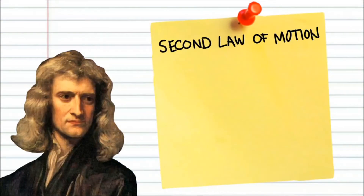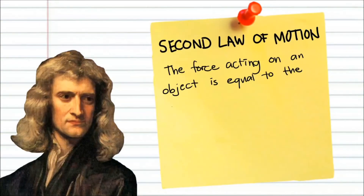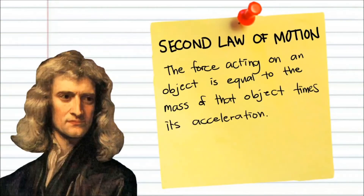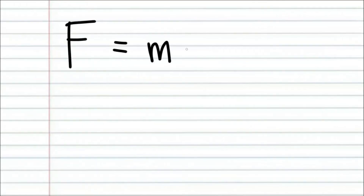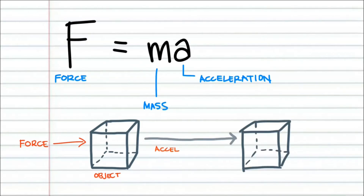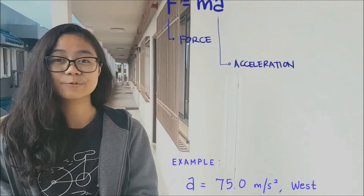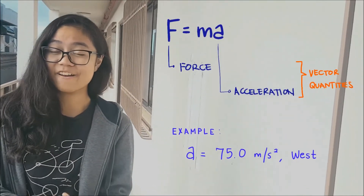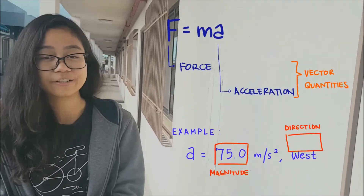Newton's second law of motion states that the force acting on an object is equal to the mass of that object times its acceleration. Mathematically, it can be written as F is equal to MA — F meaning force, M mass, and A acceleration. This equation describes what happens to an object when an external force acts upon it. Force and acceleration are vector quantities, meaning they have magnitude, or a value, and direction. A force applied to an object at rest will cause it to accelerate with the direction of the force.